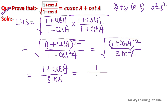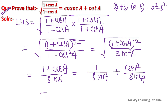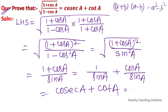Now splitting the fraction, we get 1 upon sin A plus cos A upon sin A. We know that 1 upon sin A equals cosec A, and cos A upon sin A equals cot A. This equals RHS, hence proved.